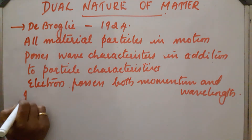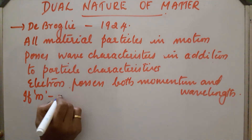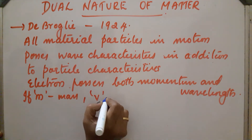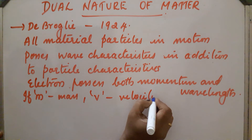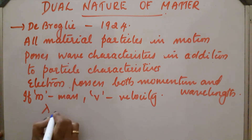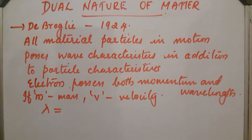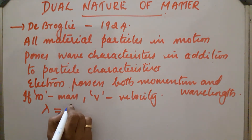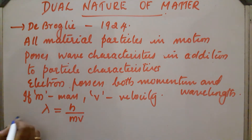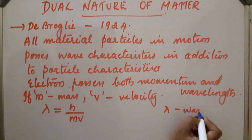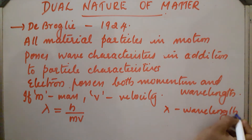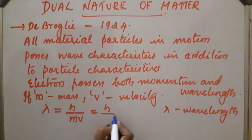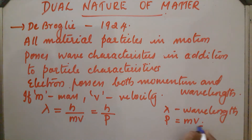If m is the mass of the particle and v is the velocity of the particle, then lambda — the wavelength of the wave associated with the particle — is equal to h divided by mv. We can also write this as h divided by p, where p is the momentum, and p equals mv. So lambda equals h/mv or h/p.